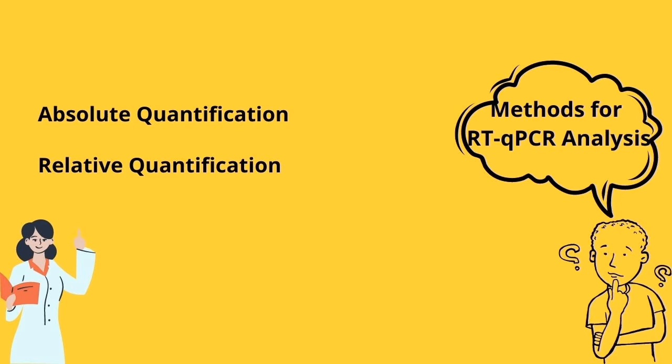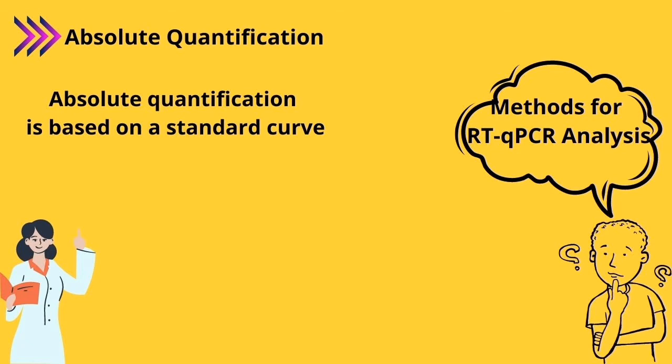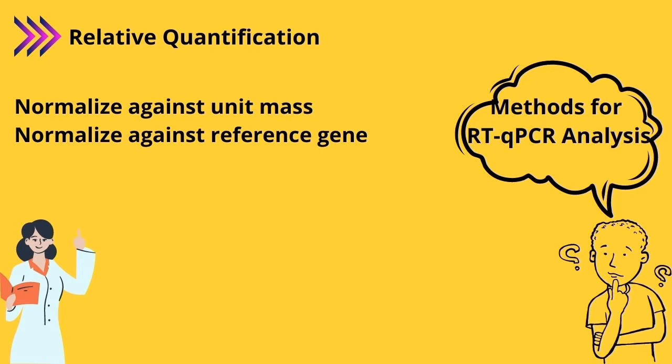We have two common methods for real-time qPCR data analysis: absolute quantification and relative quantification. It's up to you which one to select. In absolute quantification, you need a standard curve to estimate DNA quantity. For relative quantification, you can use one or more reference genes or a unit mass to normalize data.